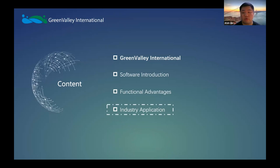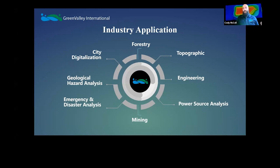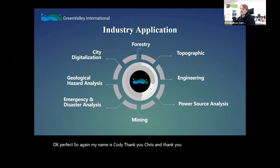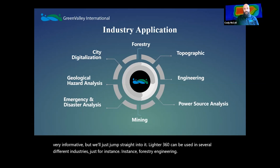Cody will now continue with industry applications. LiDAR 360 can be used in several different industries — for instance, forestry, engineering, mining, city digitalization, and more. In agriculture and forestry surveying, you can obtain forest population parameters including height variables, intensity variables, coverage, clearance rate, and leaf area index. You can even get single-tree parameters such as diameter and crown width, average DBH, and perform detection and analysis of forest structure changes — really valuable for conservation and preservation efforts. As you can see in the forest point cloud data, there are a massive number of trees, and we were able to segment every single one of them with individual IDs — very useful for inventory purposes.